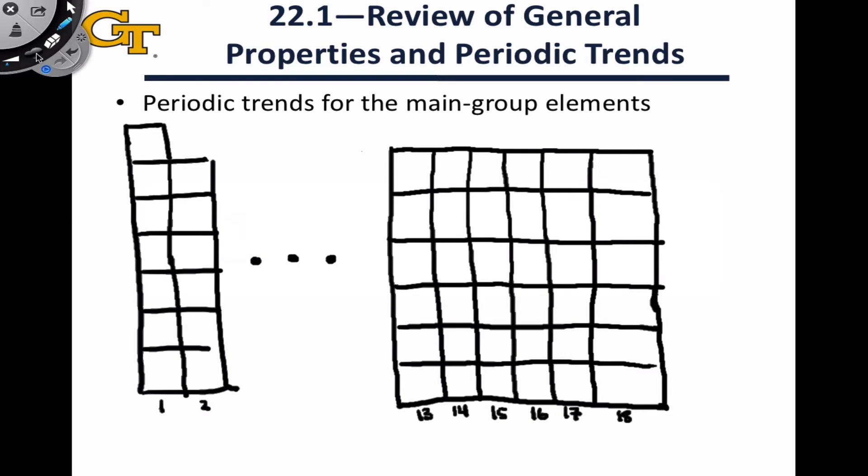Let's review how these key properties vary across the periodic table, starting with properties across a period. As we move from left to right across a period, ionization energy increases, electronegativity increases, and atomic radius decreases.